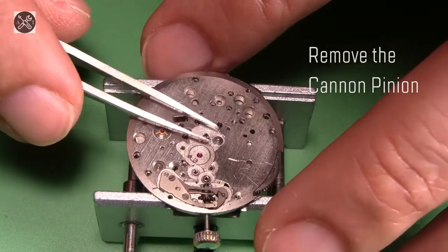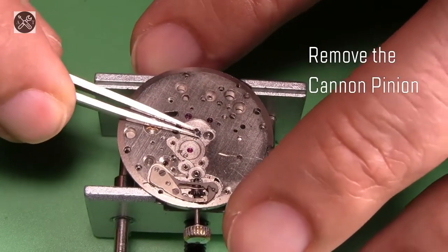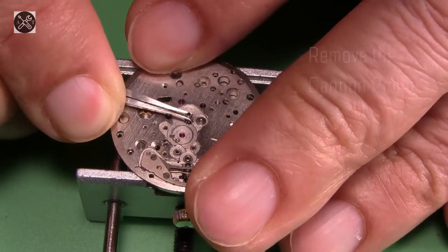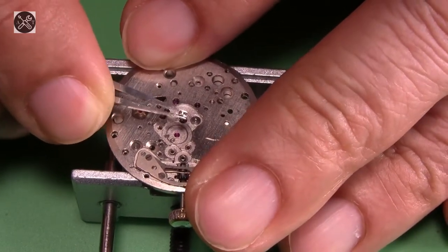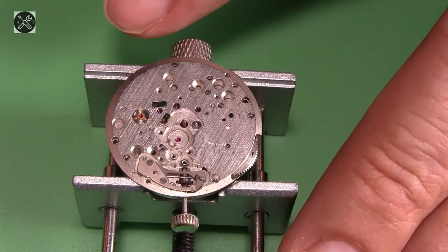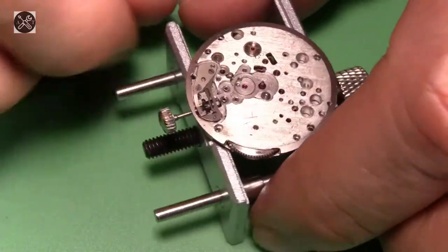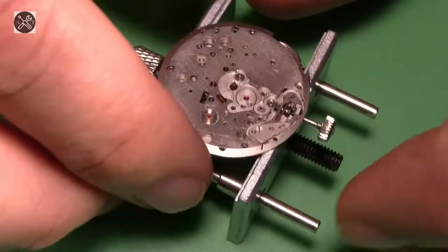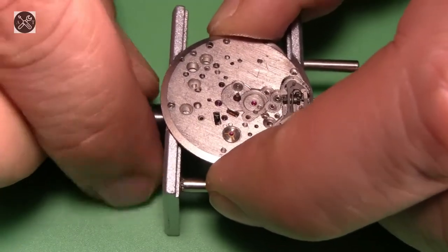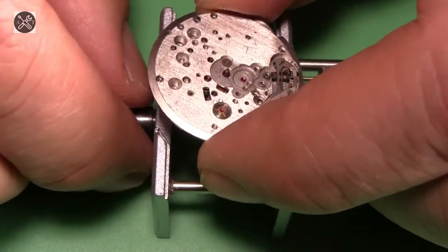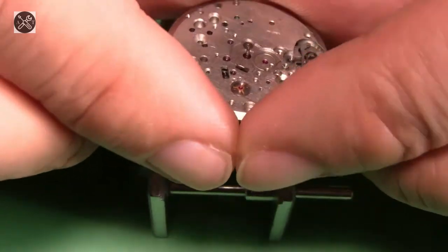Now that's out of the way, next one will be the cannon pinion. I'll have to remove this if I want to pull out the train wheels. If you don't pull this out, you won't be able to take out the central wheel. So, now that's done, I'll work on the other side.